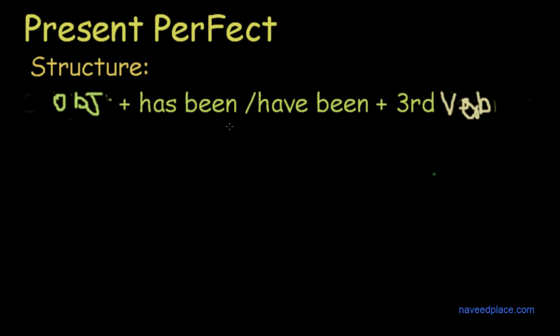Object plus has been, have been plus third form verb. Object plus has been, have been plus third form verb. This is a structure of Present Perfect.